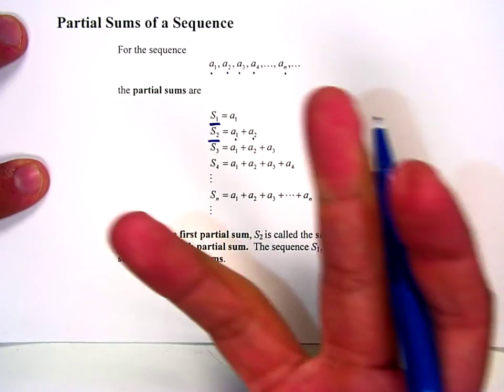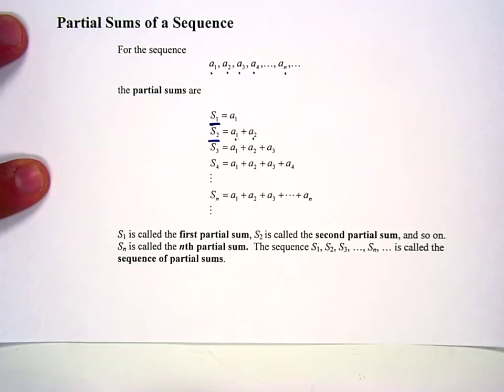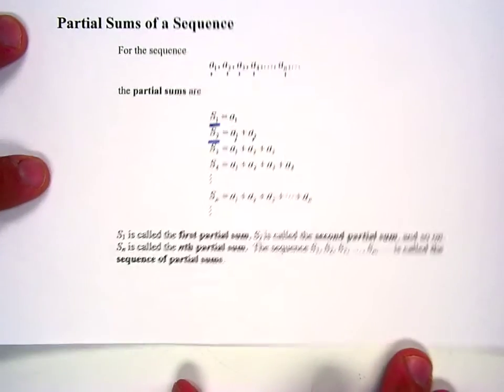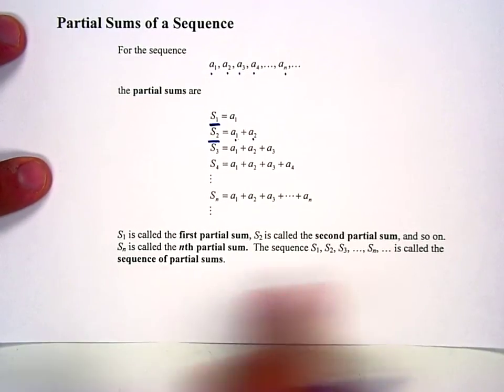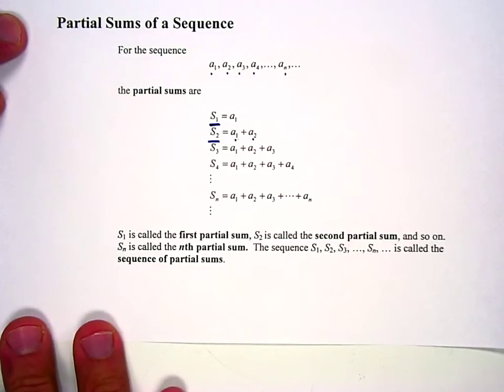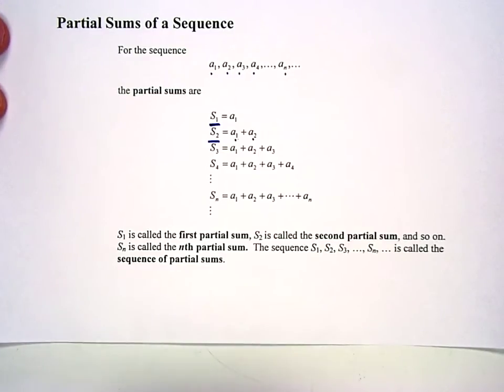The nth partial sum is the sum of the first n terms. We're going to use that terminology a lot, the nth term. And the nth term is just out there. And there's some other information, s sub 1 is the first partial sum, s sub 2 is the second partial sum, and so on and so on.